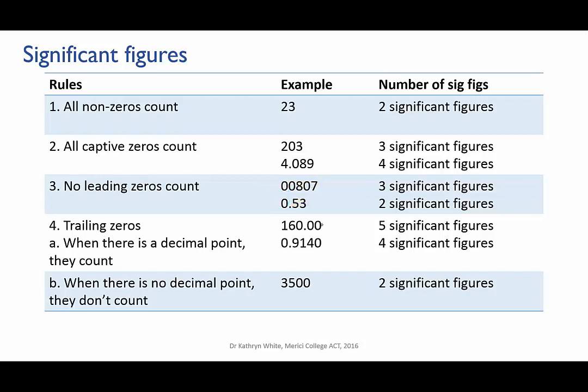Fourth rule is to do with trailing zeros, but there are two possibilities here. In numbers where there is a decimal point, trailing zeros are significant. This is because if a decimal point has been specified, then we know that all of those digits have actually been measured. If they hadn't, they wouldn't even be written down. So 160.00 has five significant figures because all of those zeros were actually measured, and 0.9140 has four significant figures.